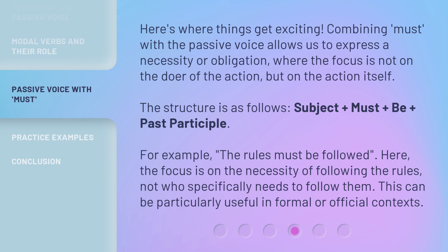Here's where things get exciting. Combining must with the passive voice allows us to express a necessity or obligation, where the focus is not on the doer of the action, but on the action itself. The structure is as follows: subject + must + be + past participle. For example, 'The rules must be followed.' Here, the focus is on the necessity of following the rules, not who specifically needs to follow them. This can be particularly useful in formal or official contexts.